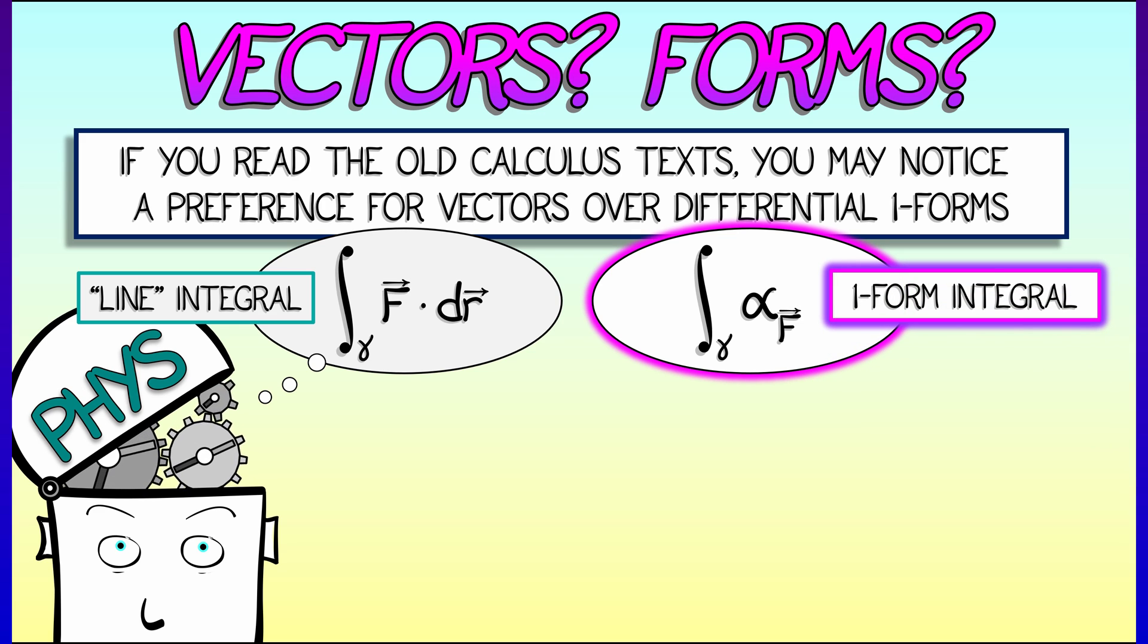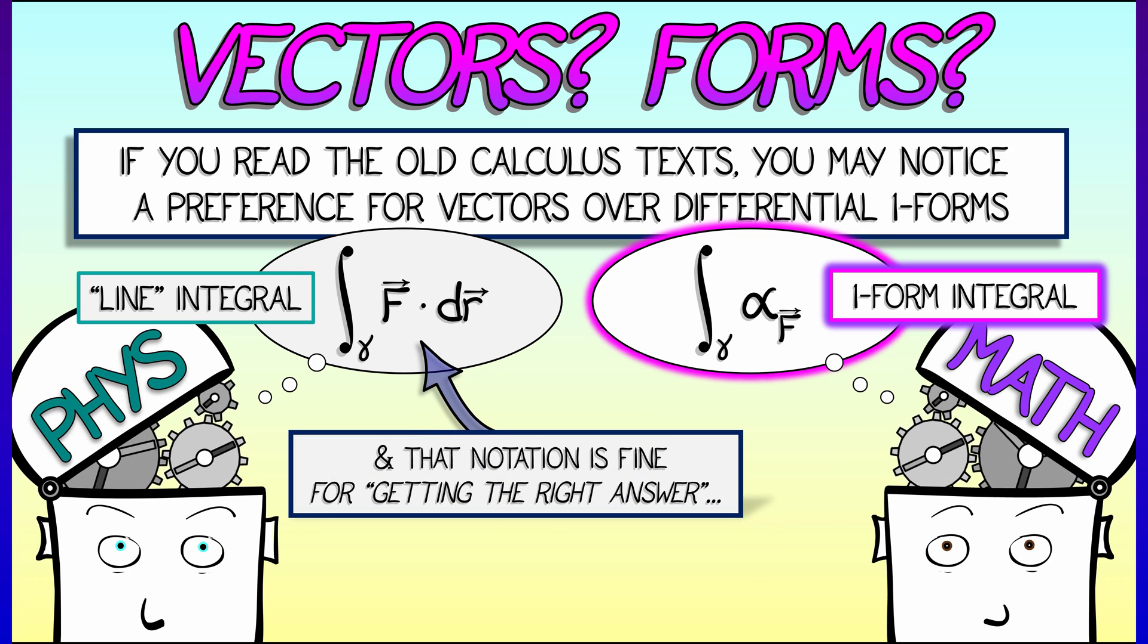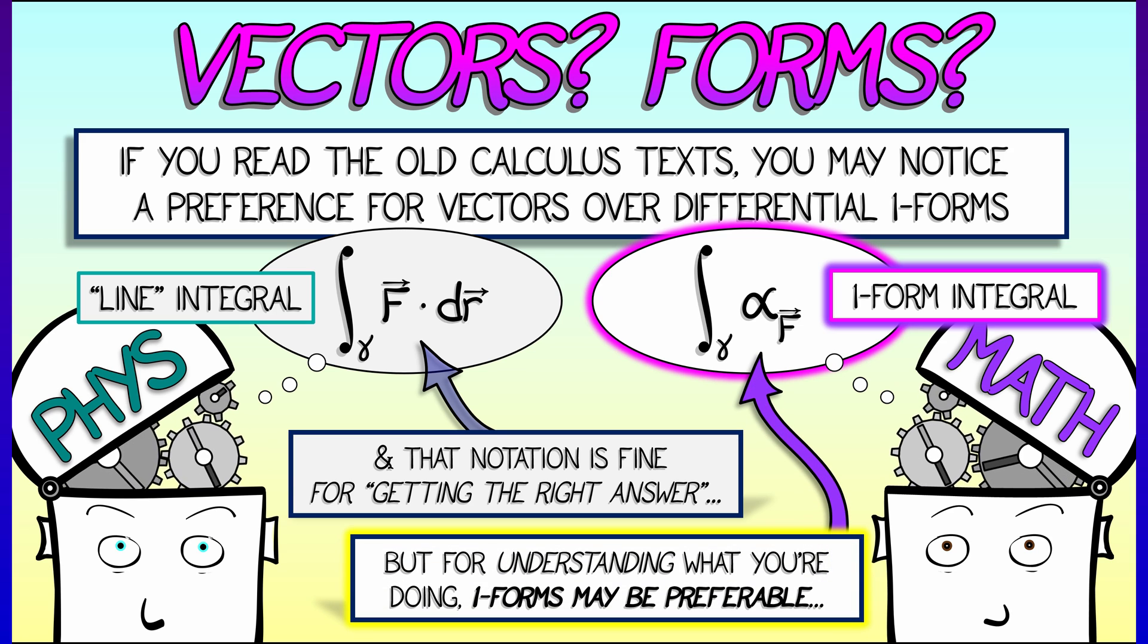In contrast, we're going to predominantly use the notation of one-forms. This is the way that mathematicians tend to denote things, tend to think about things. Now, they're equivalent, and no one notation is necessarily better than the other. The old-fashioned vector notation is perfectly fine for doing integrals, for getting answers. In my opinion, the notation and perspectives of one-forms is somewhat preferable for understanding what it is that you're doing. But we're going